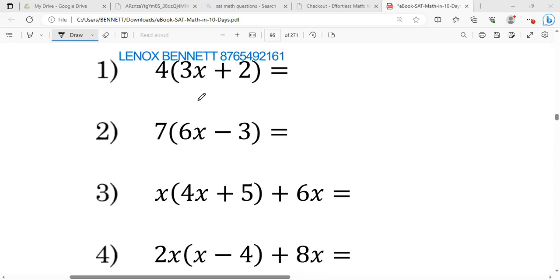Hi guys, let's look at some SAT practice questions. This is also valid for CSEC. We are supposed to simplify, and it's very simple. All we have to do is multiply each term in the bracket by four, because the bracket means multiply. So it would be 4 times 3x which is 12x, and 4 times 2 which is 8.